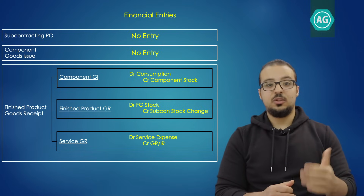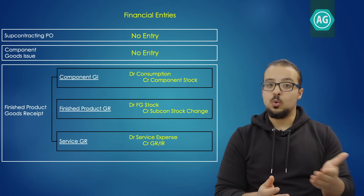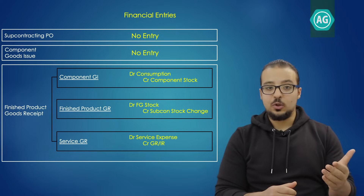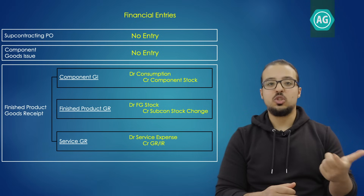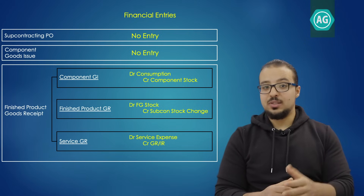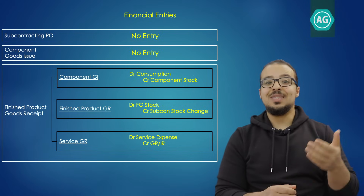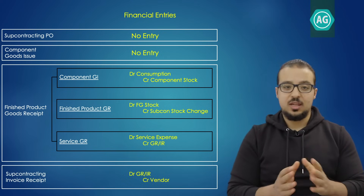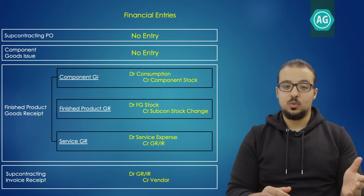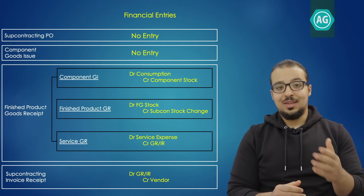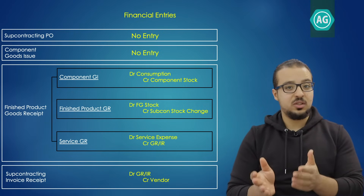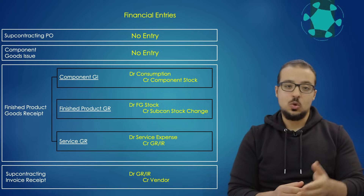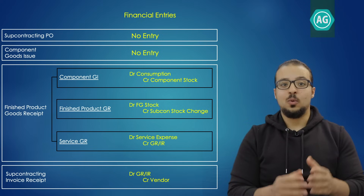The three simultaneous transactions are: first, the goods issue of the component (unpainted chair); second, the goods receipt of the finished product (painted chair); and third, the goods receipt of the subcontracting service. For the goods issue of the component: debit consumption account, credit component stock account. For the goods receipt of the finished product: debit finished product stock, credit subcontracting stock change account. For the goods receipt of the subcontracting service: debit expense account, credit GR/IR account. For the invoice receipt: debit GR/IR account, credit vendor account — and any price difference is posted to the same expense account.